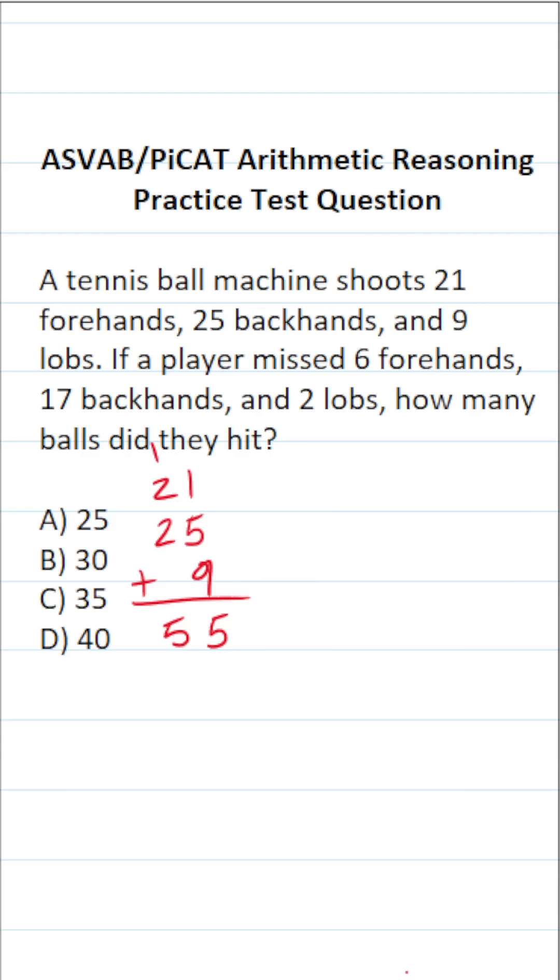Now let's add up the number of shots that the player missed. Again, they missed 6 forehands, 17 backhands, and 2 lobs. 7 and 6 is 13, plus 2 is 15. So bring down a 5, carry a 1. 1 and 1 is 2. So they missed 25 shots in total.